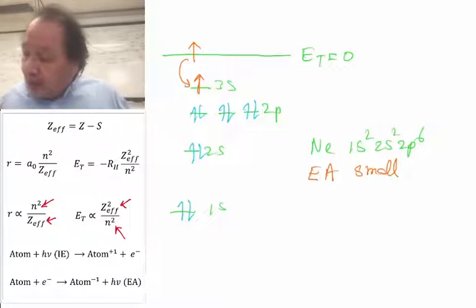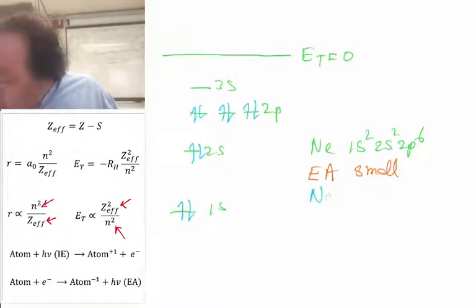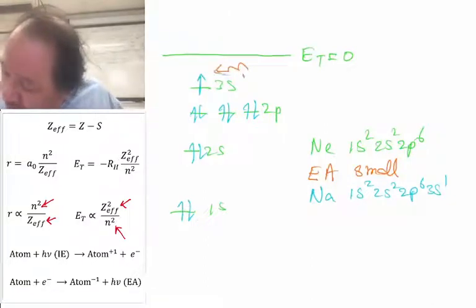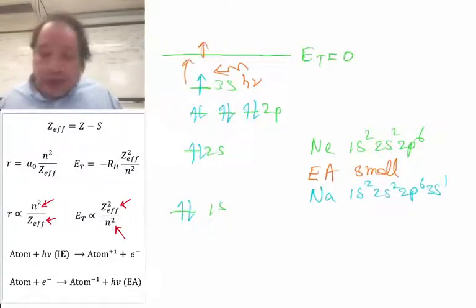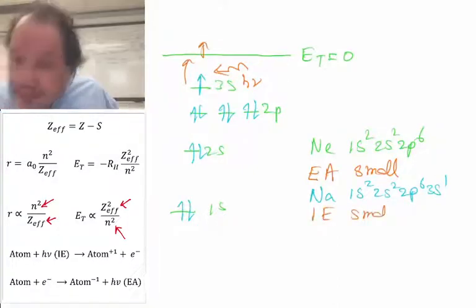And in exactly the same way, we can look at the next element of the periodic table, which is sodium. Sodium is 11 electrons, 1s² 2s² 2p⁶ 3s¹. It's the 11th element. So the 11th electron goes here in 3s. It's a very high energy electron. It's not going to take much energy light to release that electron to make it free. And that means that sodium has a small IE. This is the filled shell effect.